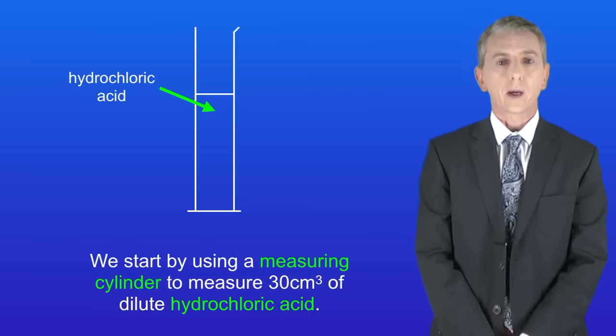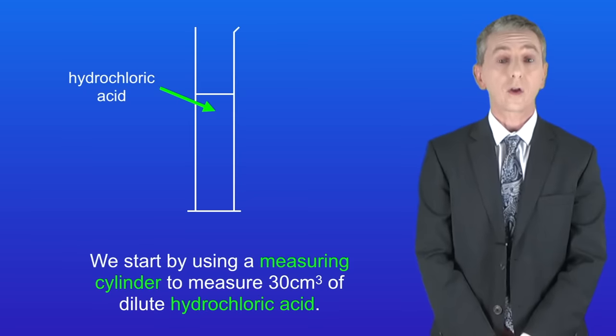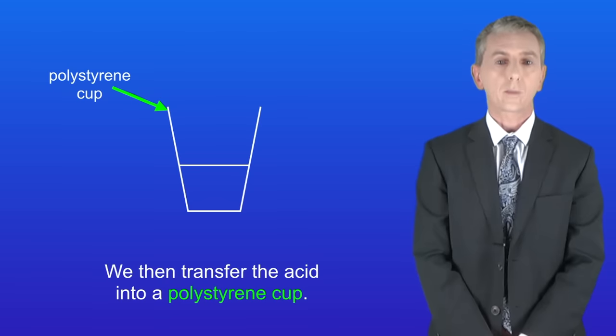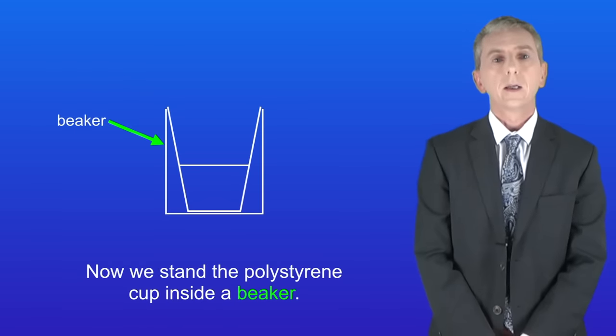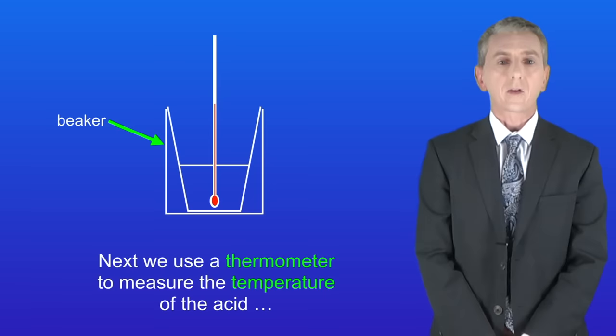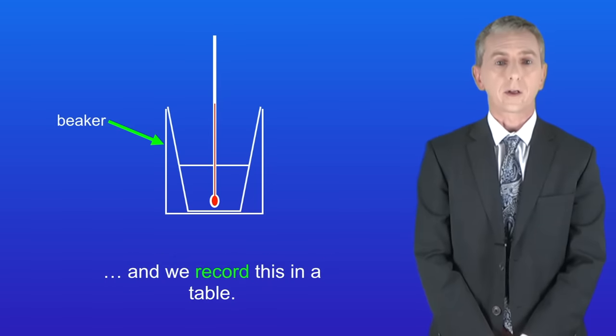We start by using a measuring cylinder to measure 30 centimeters cubed of dilute hydrochloric acid. We then transfer the acid into a polystyrene cup. Now we stand the polystyrene cup inside a beaker and this stops the cup from falling over. Next we use a thermometer to measure the temperature of the acid and we record this in a table.